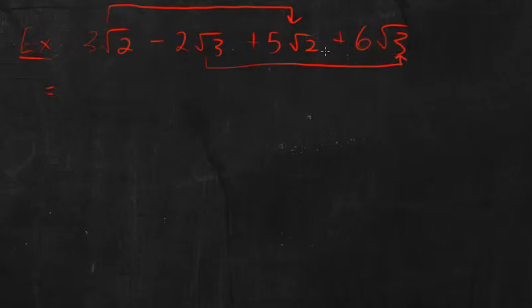One step might be to group them up into like pairs. So, what I have is 3 root 2 plus 5 root 2. And I'm going to add that to negative 2 root 3 plus 6 root 3. So, I group them up. This might be a step that you could do mentally.